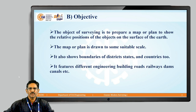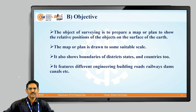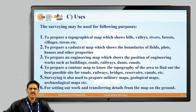When you look at the objectives of surveying, we understand that surveying is basically to prepare maps or plans to their suitable scale, to show boundaries of districts, states and countries, as well as to prepare different engineering works such as roads, railways, dams, etc. using these measurements. It forms the basis of any work — whether mechanical or civil engineering, it has to start with surveying. Surveying has many applications: topographical maps, cadastral maps, engineering maps, contour maps and so on.